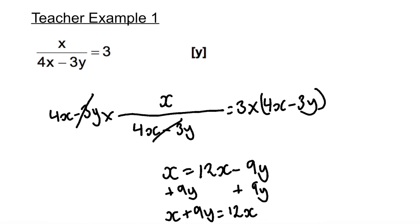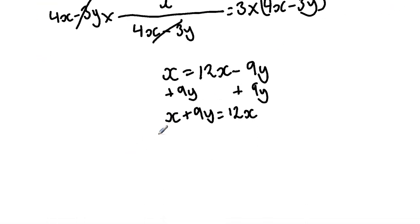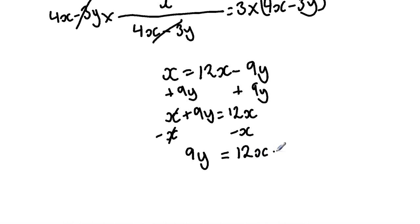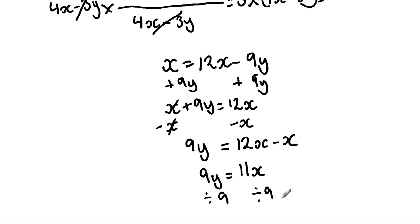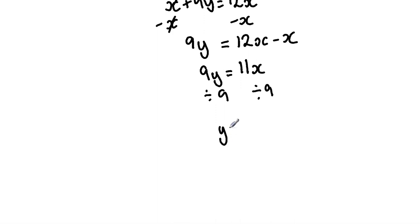I'm then going to subtract x from both sides. x minus x gives us 0, so that cancels out. So we have 9y equals 12x minus x. Simplifying further, 9y is equal to 11x. Then I'm going to divide both sides by 9. So our final answer is y is equal to 11x over 9.